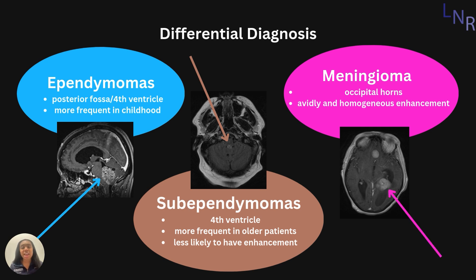Lastly, we have meningiomas, which are usually found in the occipital horns, and they are usually seen with homogeneous enhancement. We have an example of a meningioma in this highlighter pink color.